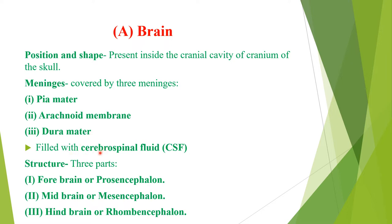All the spaces present in the brain are filled with cerebrospinal fluid, which is alkaline in nature and has a specific gravity of about 1.005. The brain consists of three parts: forebrain, also called prosencephalon; midbrain, also called mesencephalon; and hindbrain, also called rhombencephalon.